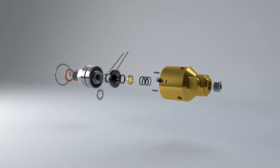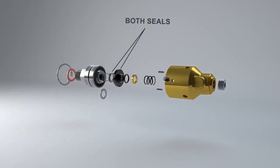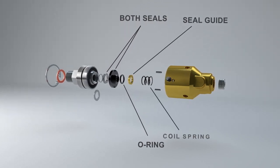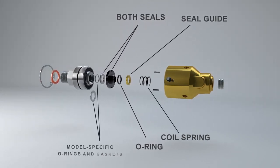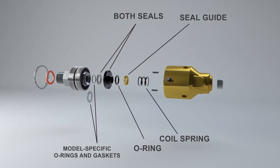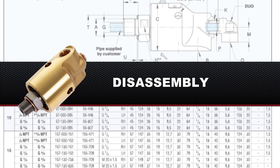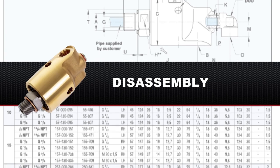The seal kit can be used to replace both seals, the o-ring, the seal guide and the coil spring as well as model specific o-rings and gaskets. Replacing these components begins with disassembling the union.